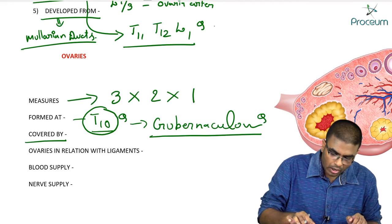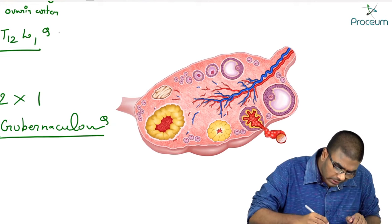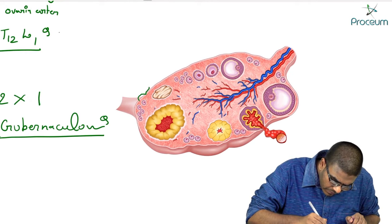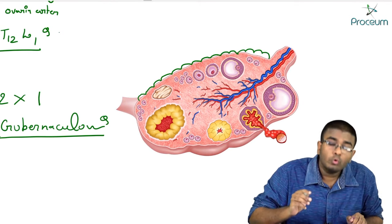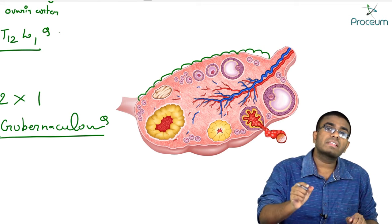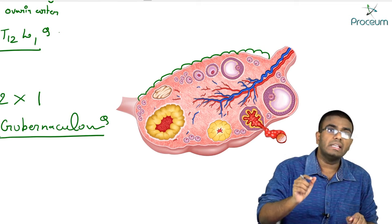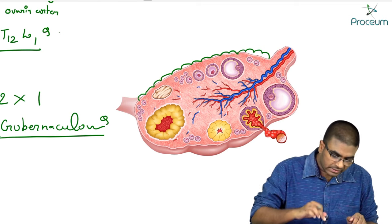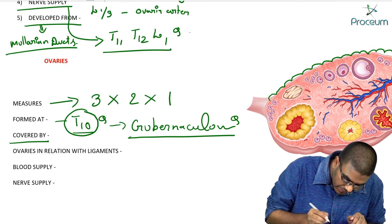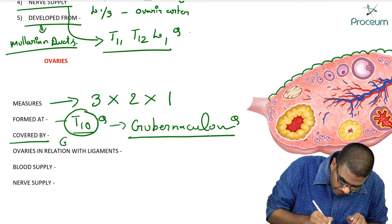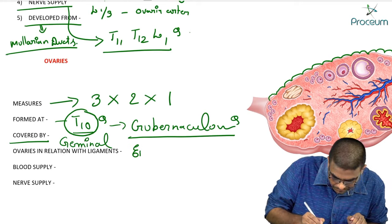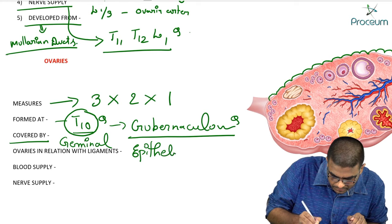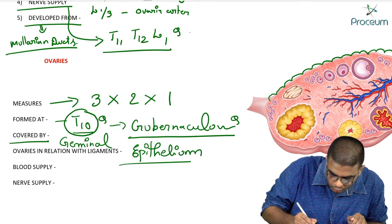On the surface of the ovaries, the female has cuboidal-type epithelial cells, known as germinal epithelial cells. So the ovaries are covered by germinal epithelium, which consists of cuboidal cells.